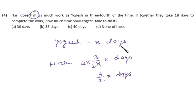Yogesh is taking X days to finish up the work all alone and Hari is taking three-by-two X days to finish up the work all alone. Now both of them are working together. So per day Yogesh will be doing one upon X of the work and per day Hari will be doing one upon three-by-two X.